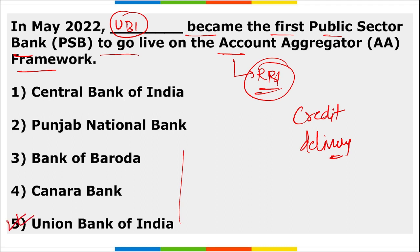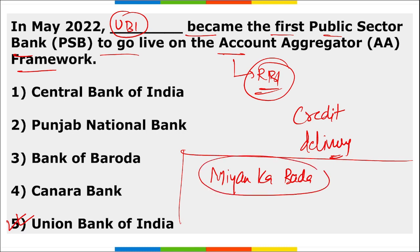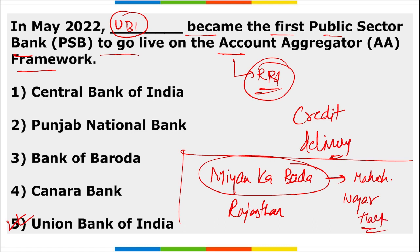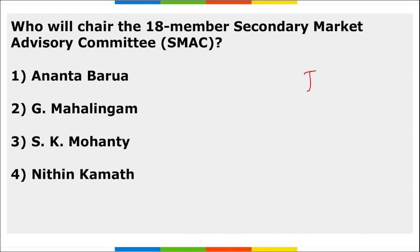Mia Ka Bada railway station in Rajasthan was renamed to Mahesh Nagar Halt.